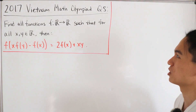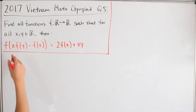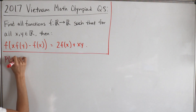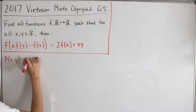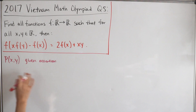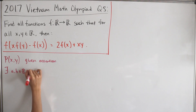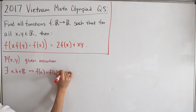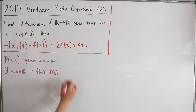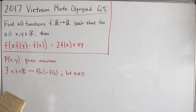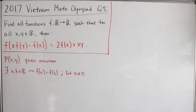We'll call our given functional equation the assertion P(x, y). First, we'll show that f is a bijective function. Assume there exist a and b in the reals. For injectivity, if f(a) = f(b) then a = b. For surjectivity — meaning f is onto — if we let x not equal zero and vary y, we can clearly see that f is indeed a surjection.